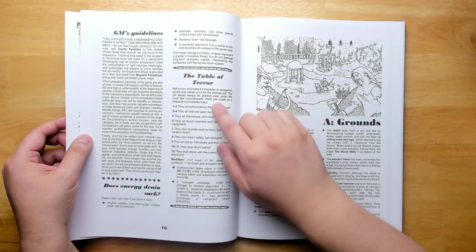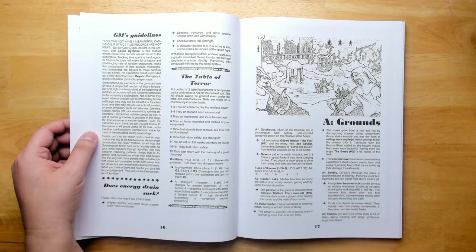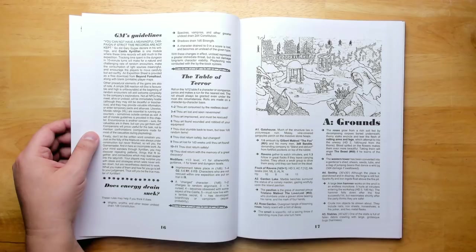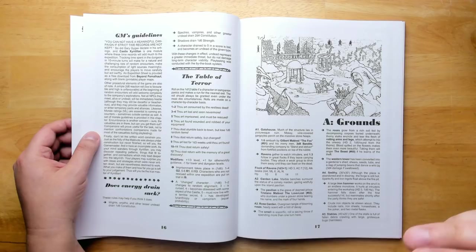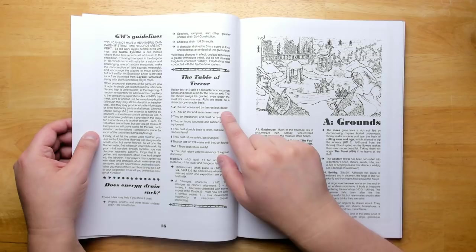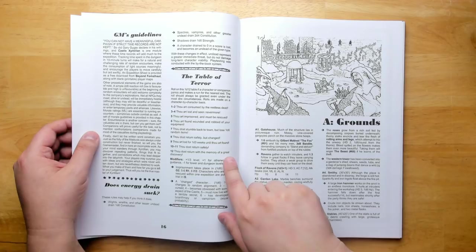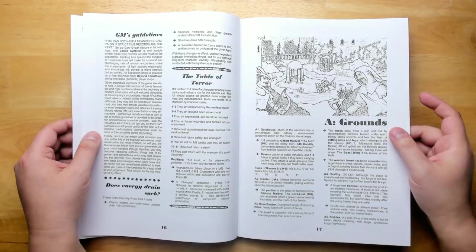We have an interesting table right here, the Table of Terror. Roll on this d12 table if a character or companion panics and makes a run for the nearest exit. The roll should always be granted even under the most dire circumstances. There's a lot of terrifying things in here, but the mega dungeon is not deep underground, so it's never too unreasonable that someone would be able to make a run for it, head down a hall, and get out a side door. So you're always going to have a chance of escaping if you just run for it, although you could just be consumed by the restless dead. But possibly something could end up like you return safely but changed, or you return with the memory of a great discovery. So there's possible benefits as well.